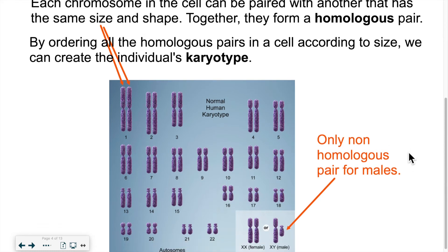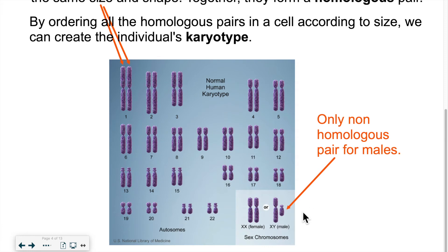There is only one pair that is non-homologous, and it's for males. The male reproductive chromosomes are X and Y, as opposed to females who have X and X. In the case of males, that one pair is not homologous because they don't have the same size and shape, but we know these chromosomes are related to what makes them male.